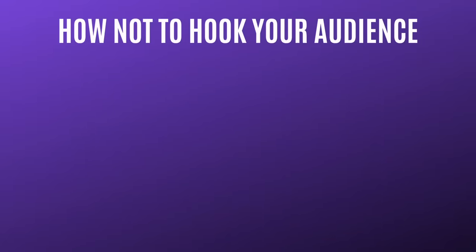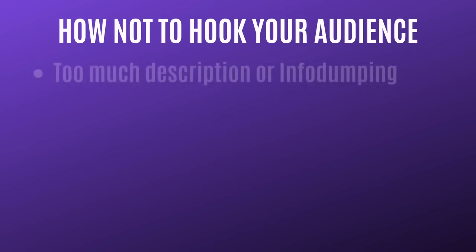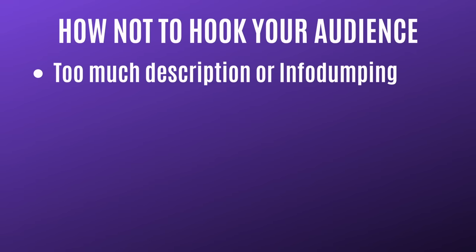Now before we wrap up, I want to give you some quick tips on how not to hook your audience — some things you want to avoid, especially at the very beginning of a story. The first thing to avoid is too much description or info dumping. Most audiences do not want to get buried under a pile of details at the start of a story. Instead, get your audience invested in the characters and their goals. Once you've established the characters, then you can start unloading heavy details and describing the history of your story world.